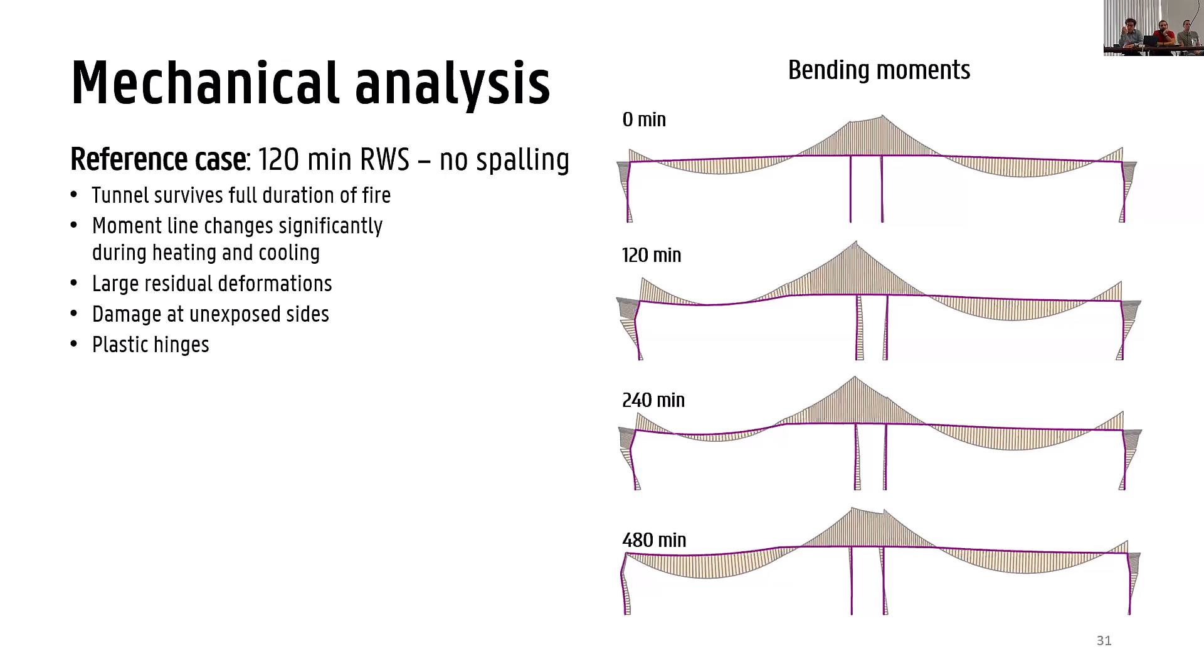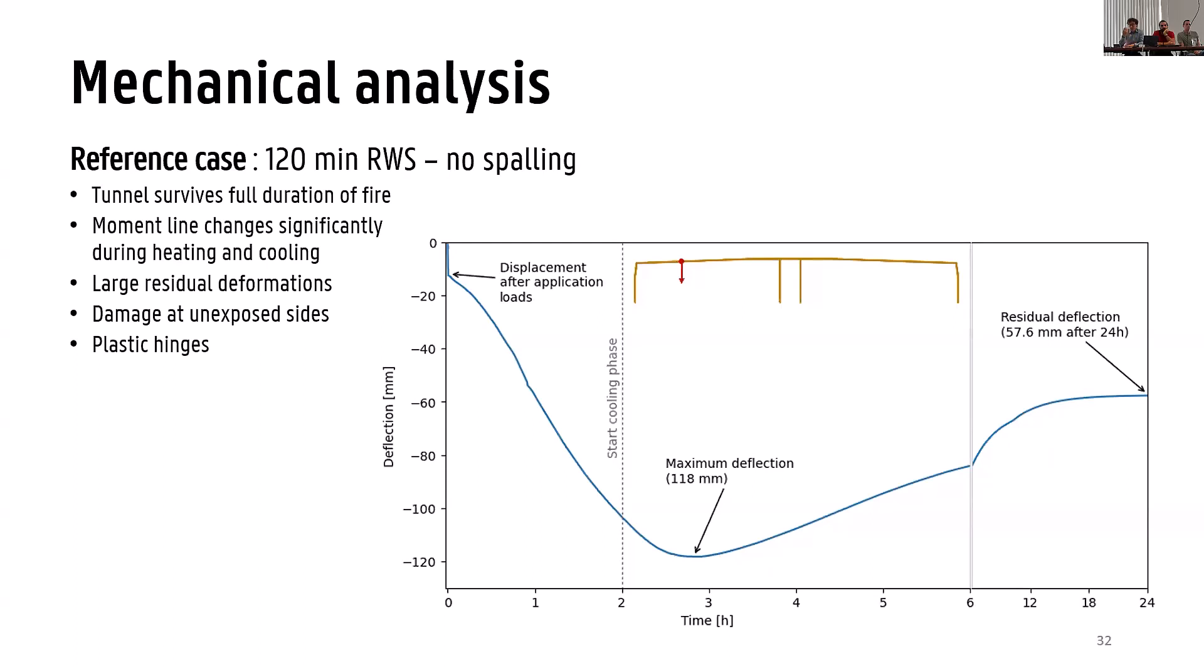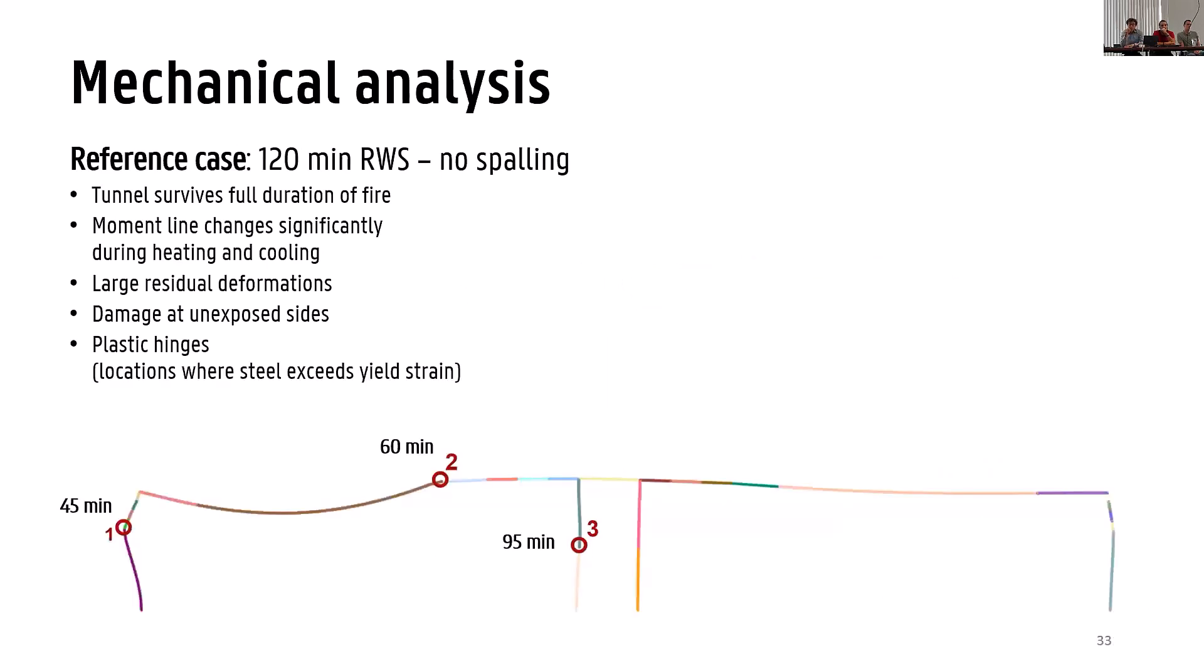We're going to show a little bit later permanent deformations here close up of different time steps there. So beginning of the fire zero minutes, 120 when the RWS exposure reaches its peak, 240, 480 during the cooling phase. So a very big difference in moment line we have similar pictures for actual forces which I'm not showing here. The key thing for the actual forces is that the internal wall, so the fire if I didn't mention this but I think this was probably quite clear is in the left tube of the tunnel, the internal wall in this left tube attracts much larger compression forces. And in this simulation these are deformations, so this is a perfect tunnel in a sense that it does not exhibit spalling, it behaves perfectly as people would want it to behave really, but still even in this kind of situation we get quite significant permanent deformations.